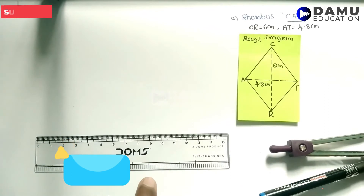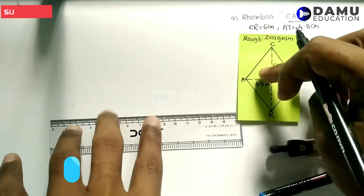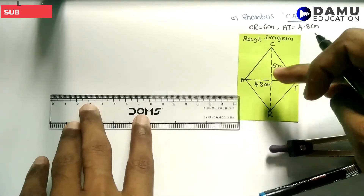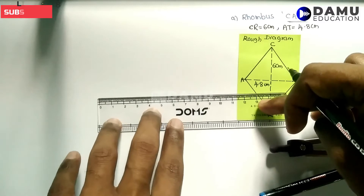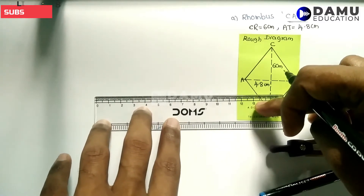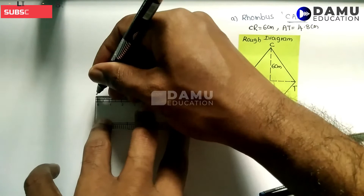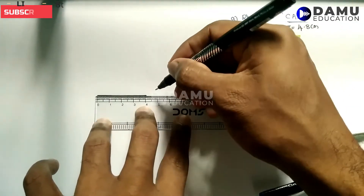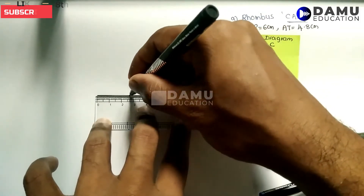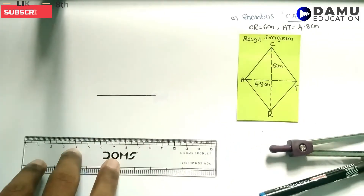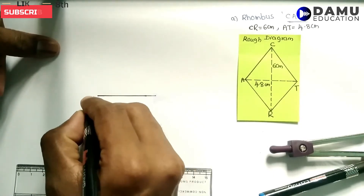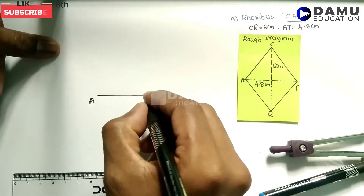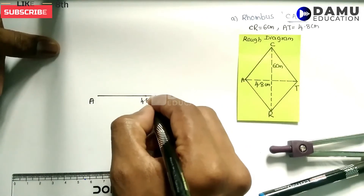First of all we have to draw 4.8 centimetres — the decimal measurement — as the base. So 4.8 centimetres: we move from 0, that is 4 centimetres and then 8 millimetres. So this 4.8 centimetres is one diagonal, and we take this as AT.